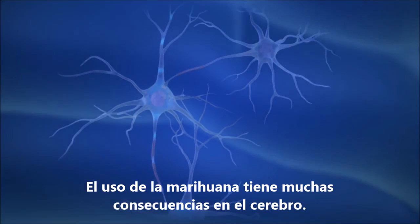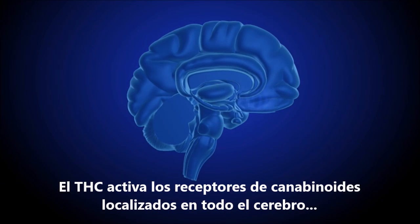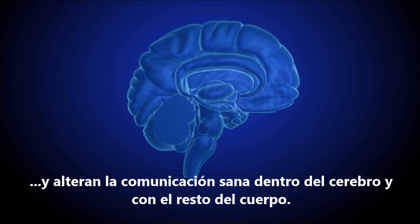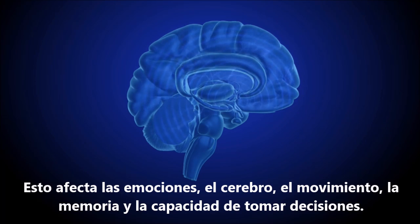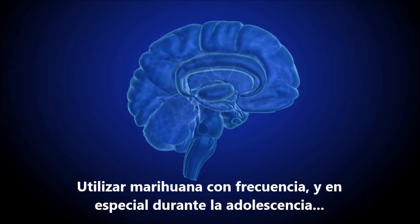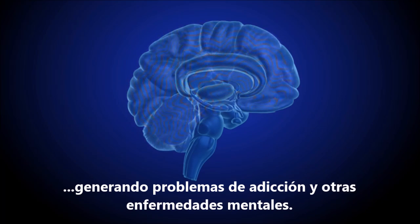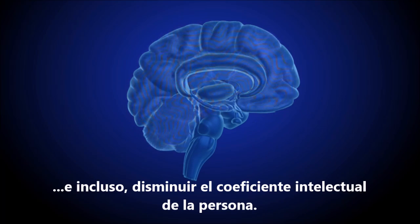Marijuana use can have far-reaching consequences in the user's brain. THC can activate cannabinoid receptors found throughout the brain, altering healthy communication within the brain and with the rest of the body. This can affect emotions, movement, learning, memory, and decision-making. Using marijuana frequently, especially during adolescence, overstimulates the reward system and can change the brain's actual wiring. Such use can lead to addiction and other mental illnesses, and even lower a person's IQ.